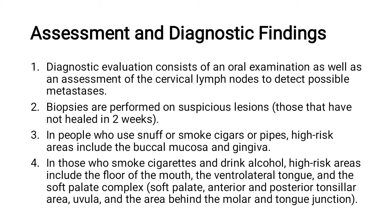In those who smoke cigarettes and drink alcohol, high-risk areas include the floor of the mouth, the ventrolateral tongue, the soft palate complex, soft palate anterior and posterior tonsillar area, uvula, and the area behind the molar and tongue junctions.